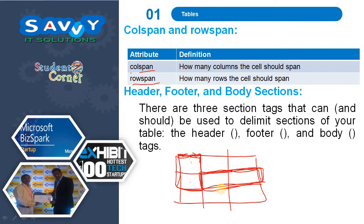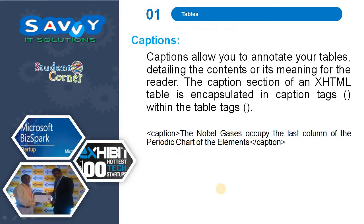Header, footer, and body sections. There are three section tags that can be used to delimit sections of your table: the header, footer, and body tags. Captions allow you to annotate your table, detailing the contents or its meaning for the reader. The caption section of an XHTML table is encapsulated in caption tags within the table tags.